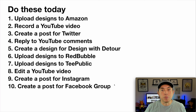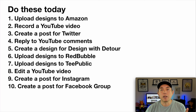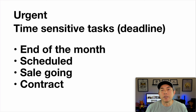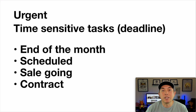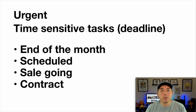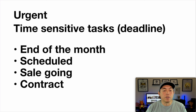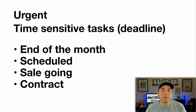To figure out which three to do first, think about urgency and importance. Urgent tasks are things that are time-sensitive — they have a deadline, something scheduled, or something that's going to end. For example, a scheduled interview, a limited sale on Redbubble you want to post about, or a sponsored video that needs to be done by a certain date. Basically, anything with a deadline or an expiration is urgent.